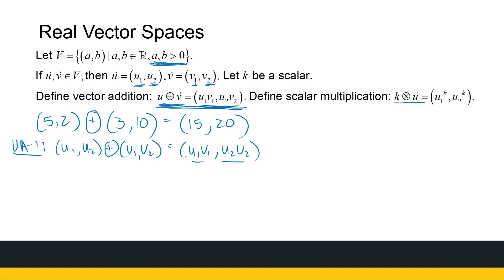So if I've got two positive numbers and I multiply them, I'm going to get a positive number. I get two positive numbers, I multiply them, I'm going to get a positive number. So this is again going to be in my set V.